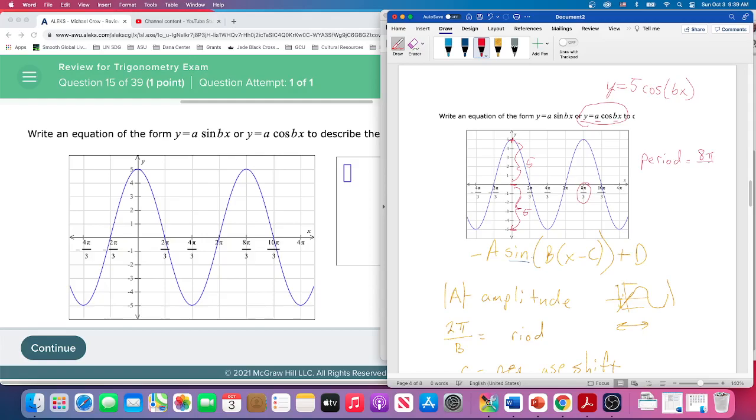Equals eight pi - I think I said it backwards - eight pi over three. So that's the period. And remember that's equal to two pi over b. So eight pi over three...